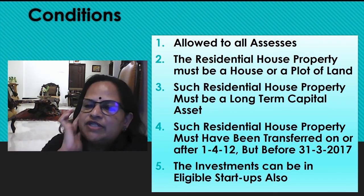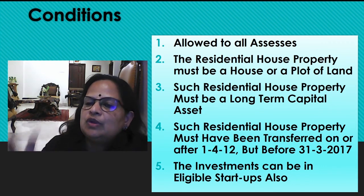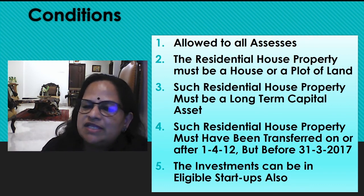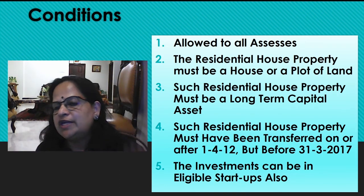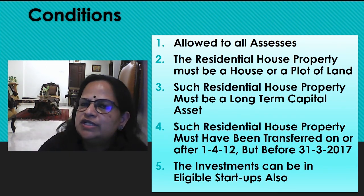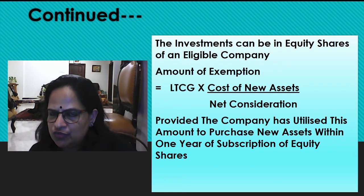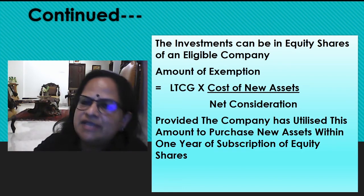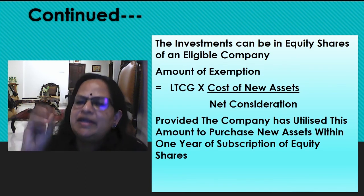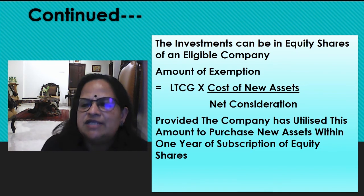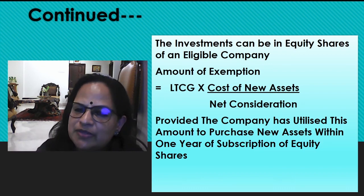The residential house property must be a house or a plot of land — either a residential house property or plot of land, not self-occupied. Such residential house property must be a long-term capital asset, not possible for short term. It must have been transferred on or after 1-4-2012 but before 31-3-2017, then only they can claim this exemption. The investment can be in eligible startups also, as the central government is giving many exemptions for starting startups. The investment can be in equity shares of an eligible company. The SSC has to form an eligible company or buy equity shares from another existing company.